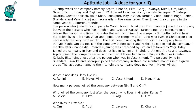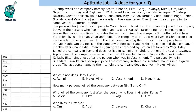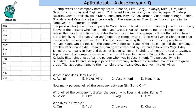Let's start with the solution. We'll have a table like this — we may need one to two cases, so I've drawn double columns. Looking at the fixed information: the person who joined the company in March lives in Janakuri, so we can put Janakuri here. Rohini and Greater Kailash: we do not know when they joined.